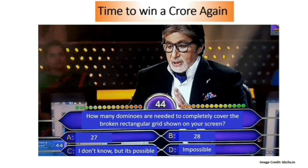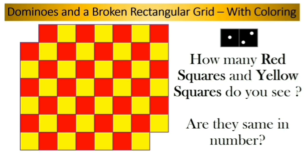The next question to win a crore again. How many dominoes are needed? Option A, 27. Option B, 28. Option C, I do not know, but it's possible. And option D, it's impossible. Well, this time, I don't think we will need the 50-50 lifeline. It should be 27, right? So in this case, it is actually possible to completely cover this grid. That was fun.